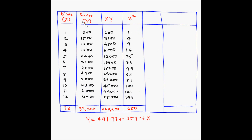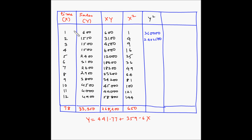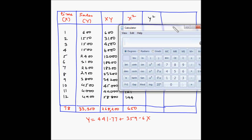In part 1 of the example we already found the values of xy and x-squared. To use the second formula we need to find the value of y-squared. We square each y value: 600 squared equals 360,000; 1550 squared equals 2,402,500; and so on for all values. Once we find all these squares we add them up. We can calculate this sum directly using a calculator.